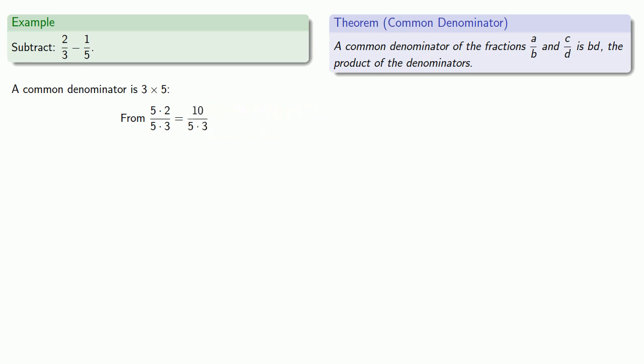And again it's convenient to leave our denominator in factored form and multiply out the numerator. And in our fraction one-fifth, the denominator is missing a factor of three, so we'll multiply the denominator by three and multiply the numerator by three as well, giving us the equivalent fraction.